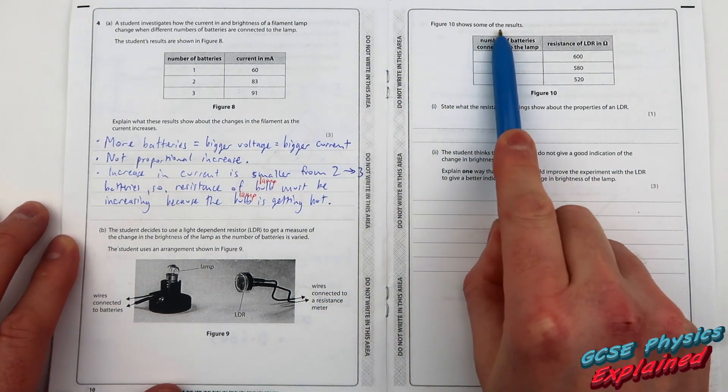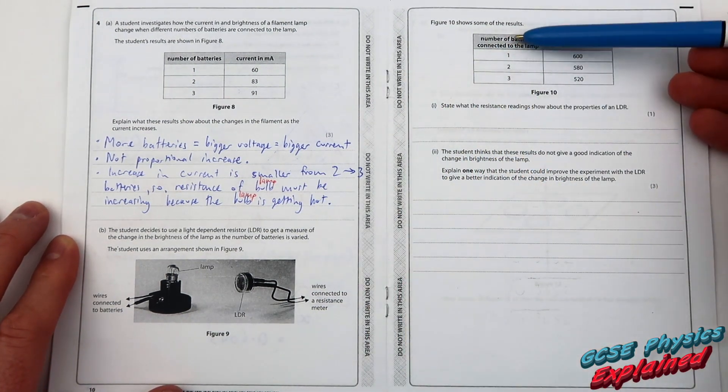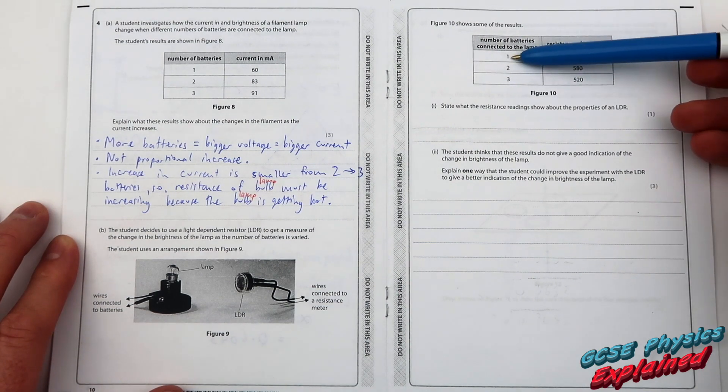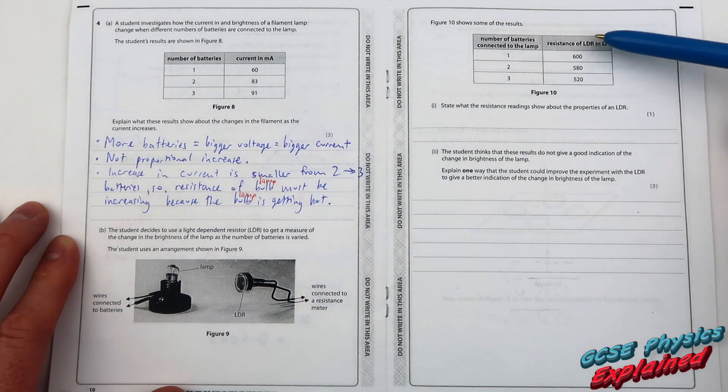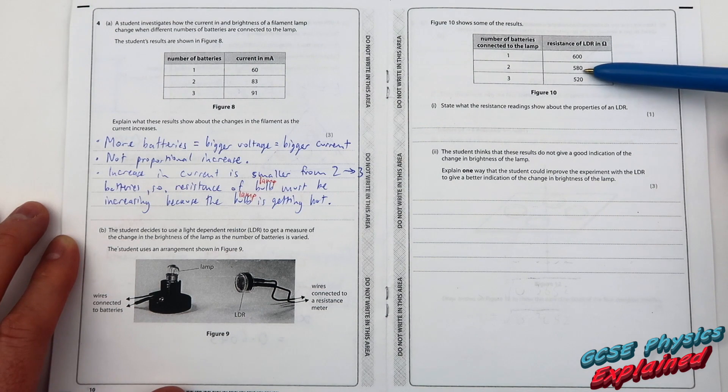Figure 10 shows some of the results. So that's the number of batteries connected to the lamp: 1, 2, 3 again, just like before. This time it's telling you the resistance of the LDR in ohms. That's 600, 580, 520.